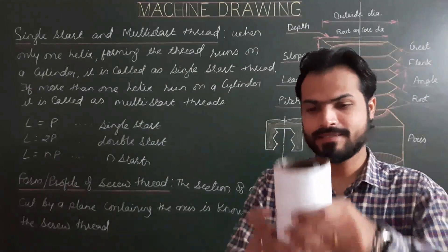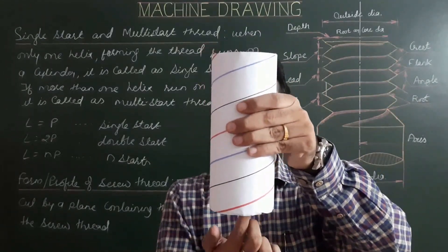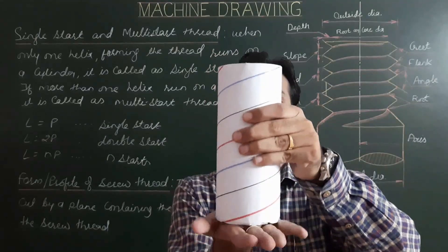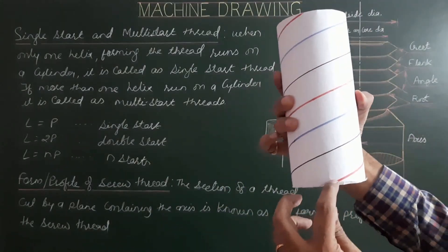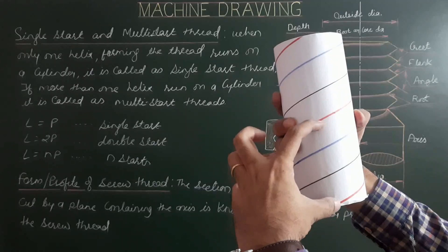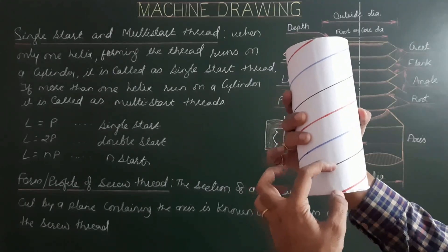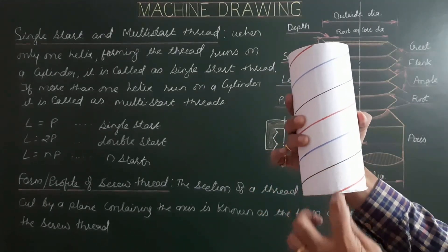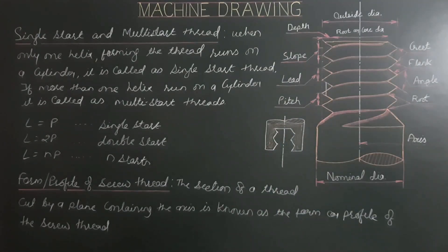For a triple-start thread, there are three starts — black, red, and blue — starting from the same circular plane. Lead equals 3 times pitch for triple start. For 4 starts, lead equals 4 times pitch, and generally for n starts, lead equals n times pitch.